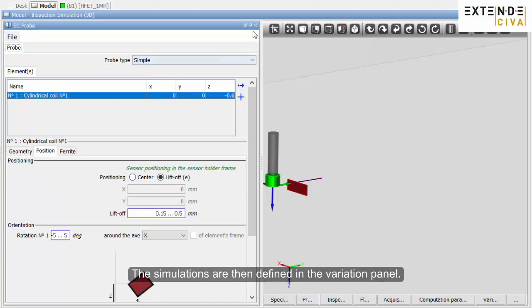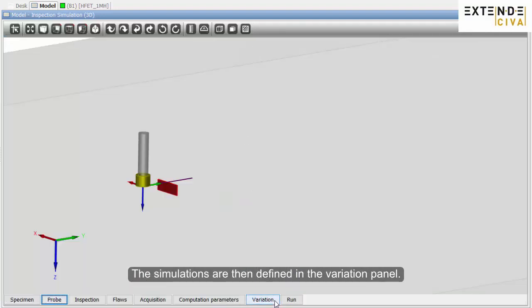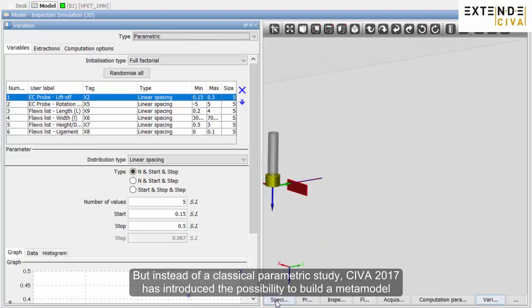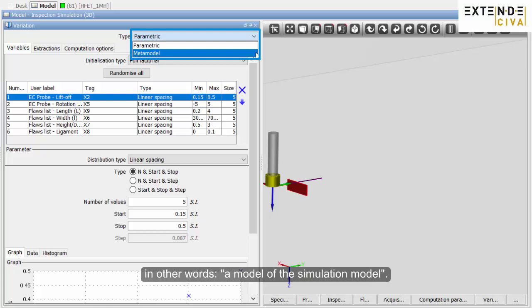The simulations are then defined in the variation panel. But instead of a classical parametric study, CIVA 2017 has introduced the possibility to build a metamodel, in other words, a model of the simulation model.